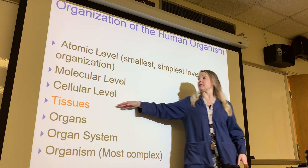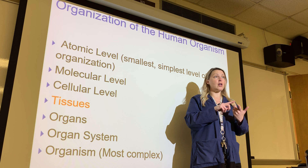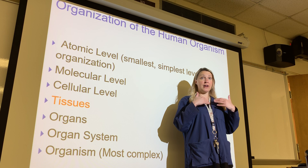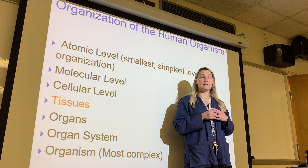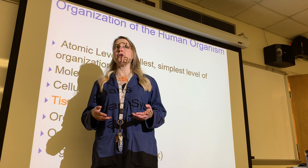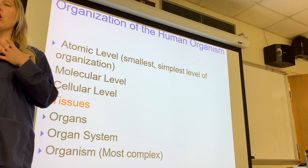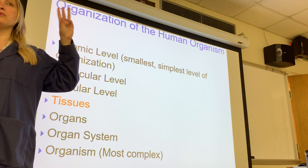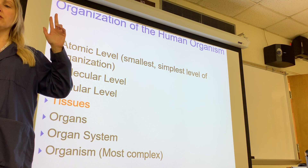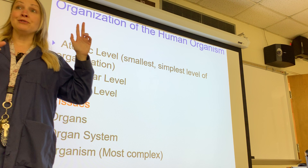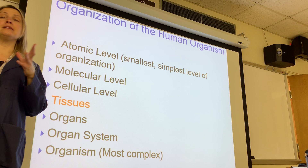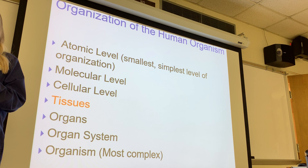Tissues come together to form organs. Look at the heart — it is made up of a lot of cardiac muscle tissue. The fibrous skeleton that forms the valves has a lot of collagen; that's connective tissue. Does the heart have nervous tissue? Absolutely — otherwise how would it beat? You need nervous stimulation to make the muscle contract and relax. So the heart has muscle tissue, connective tissue, and nervous tissue.